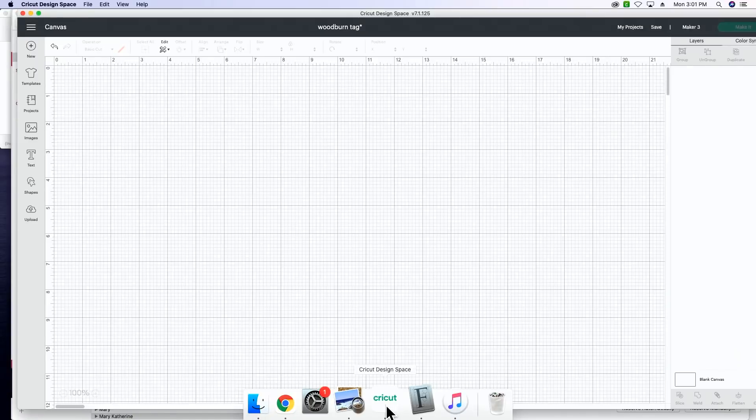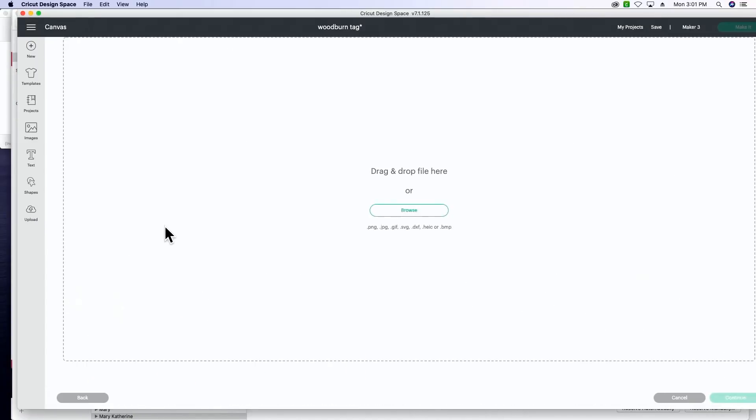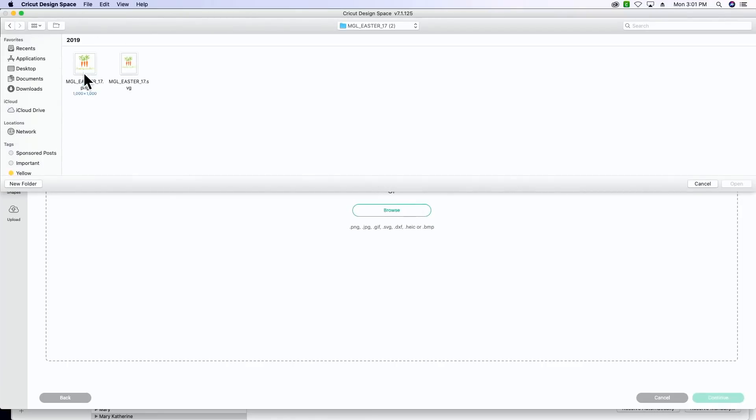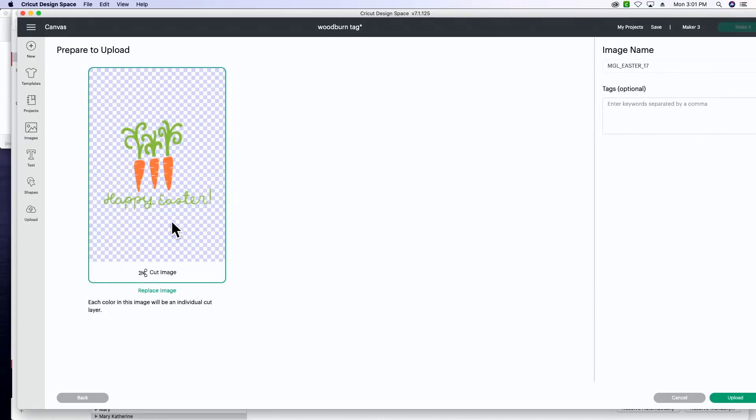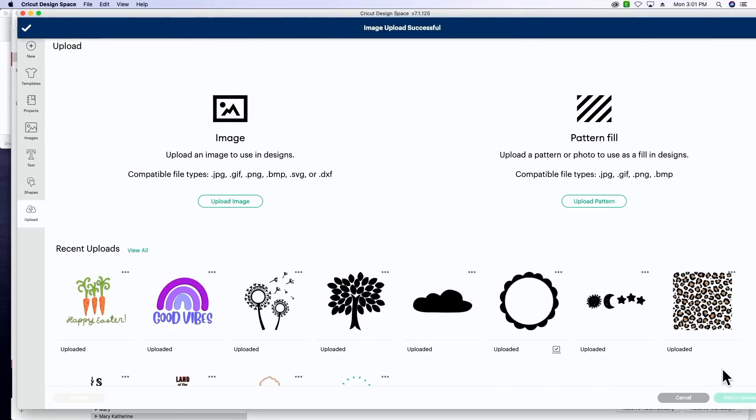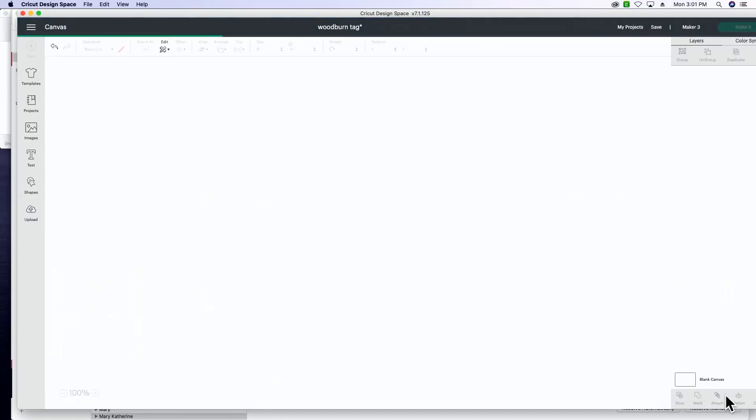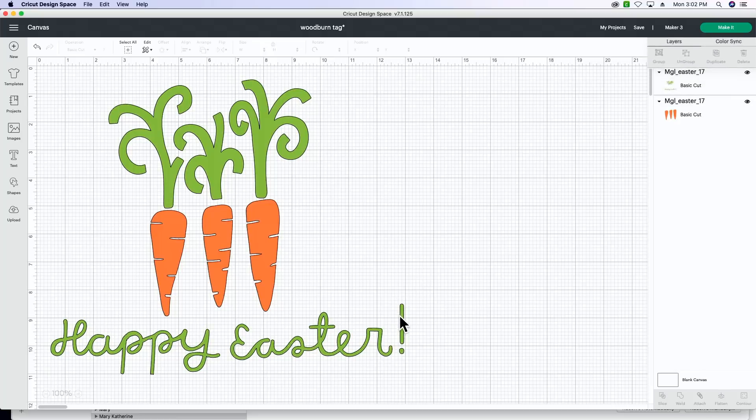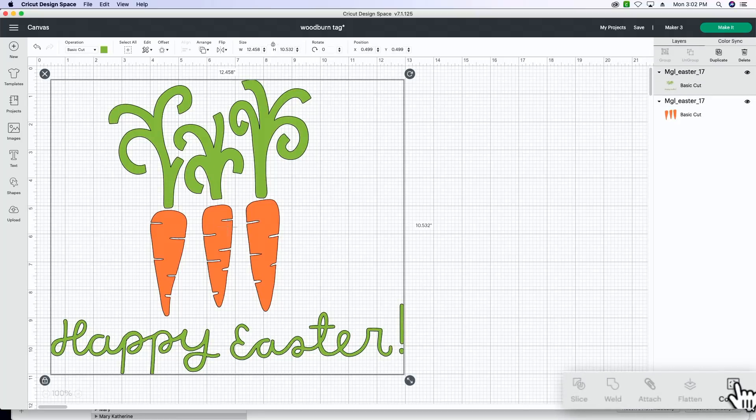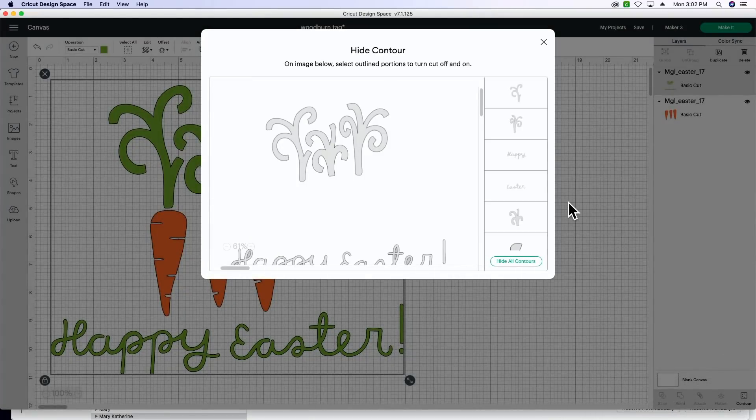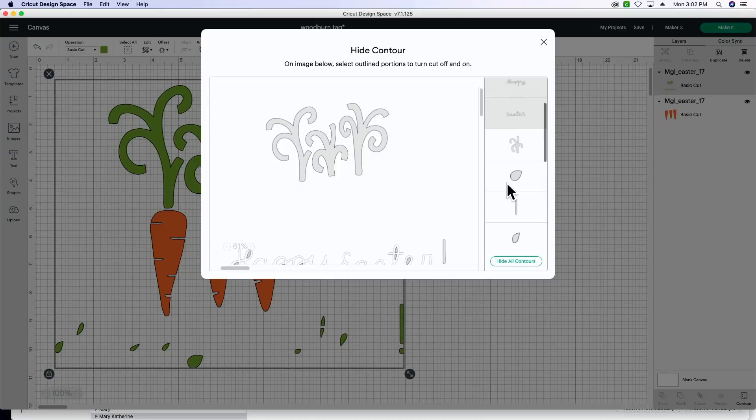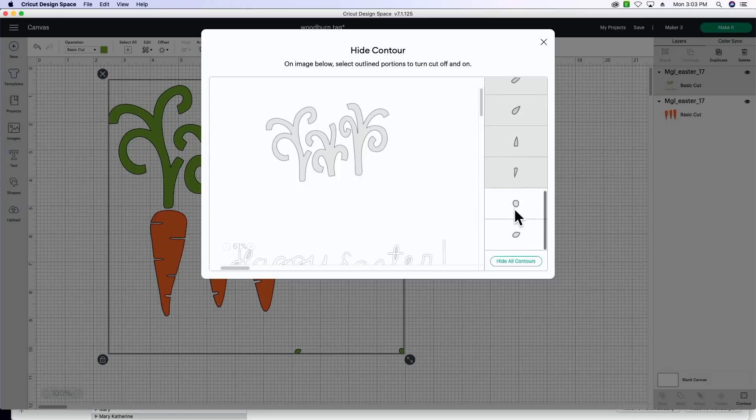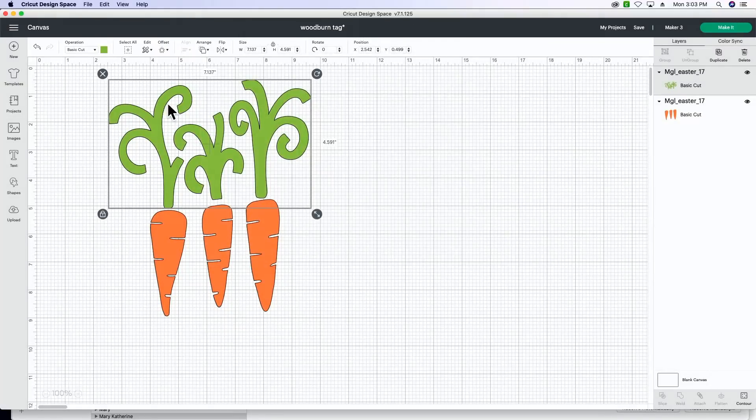After that, we're going to go back into Design Space and we are going to upload our carrot image first. We're going to pull in the SVG because we're going to be cutting. We're not doing a print and cut. So go ahead and upload that and you can add it to your canvas. We're going to go ahead and ungroup everything. I'm going to select the green only, and then we're going to drop down here to contour, and we're going to get rid of the happy Easter. We only want the green stems. So now we've only got the stems, only have the carrots, and we just need to plug in our text.